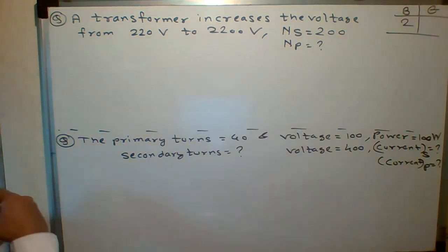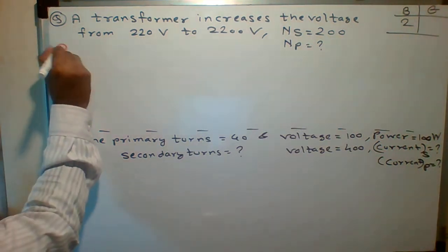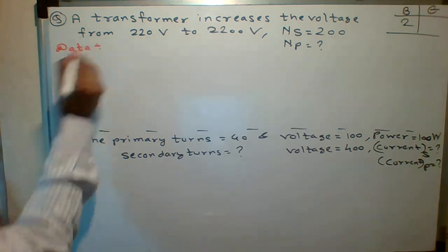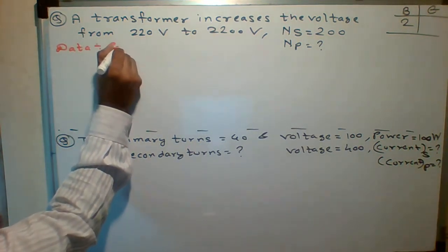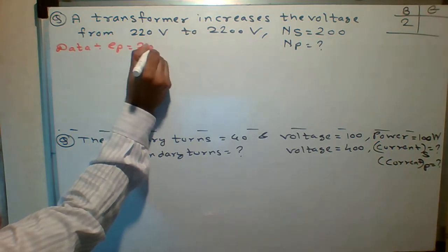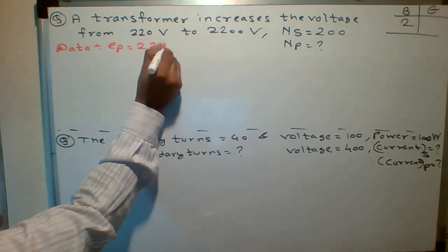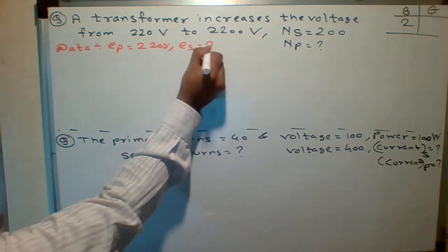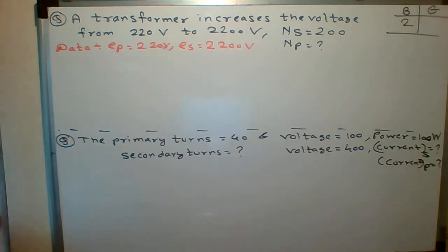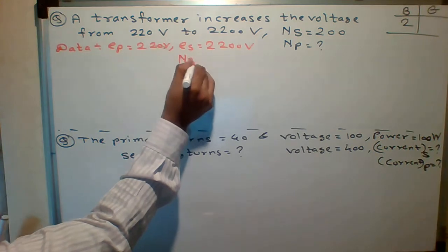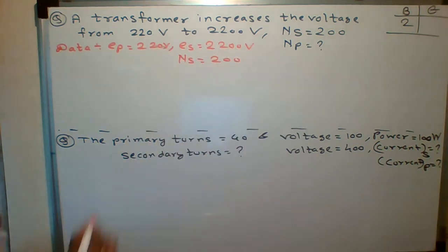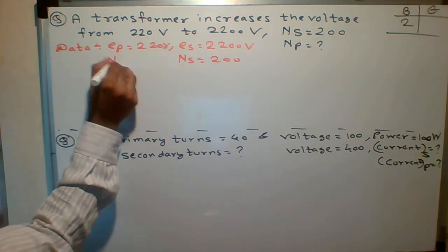Students, what is given in the first question data? Students, what is given? Transformer increases the voltage. Means what? Primary voltage, that is 220V. And secondary voltage is given, 2200V. Primary current, sorry, secondary turns are given, 200. Primary turns, we have to find out.